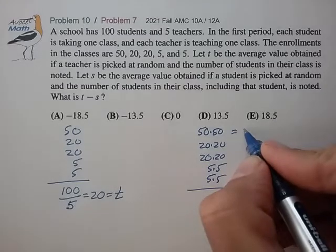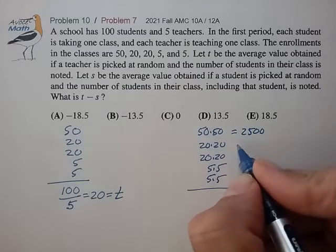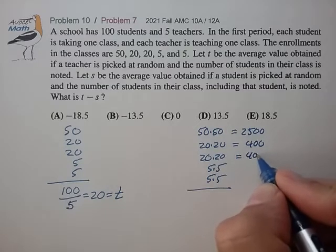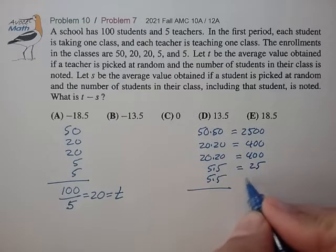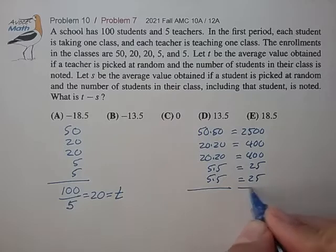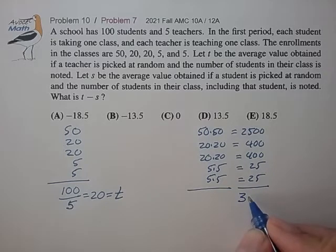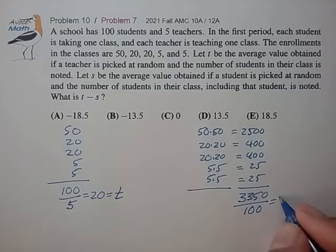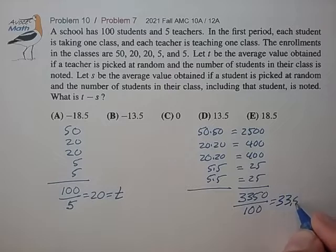So that is 2,500, 400, 400, 25, 25. Sum that up: 3,350. Divide by the number of students polled. So that's 33.5. So that's the variable we're calling S.